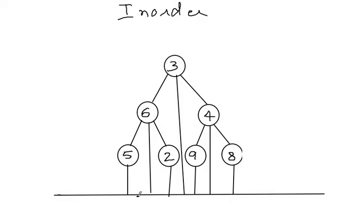Now let us see the order in which we are getting the nodes. 5, 6, 2, 3, 9, 4, 8. That is it. So if you go from left to right and read, then 5, 6, 2, 3, 9 and 4, 8. This is the inorder traversal of a tree.